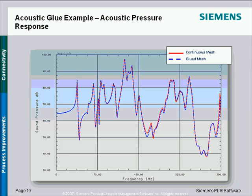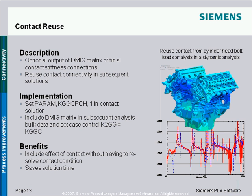For contact, we introduced what we call contact reuse. If you do a static analysis with a contact in it, you can now write out — using the parameter KGCPCH — to a DMIG, that's a matrix input file. It will write out the contact stiffness matrix. It's then very easy in subsequent runs to import this contact stiffness so that you don't have to recalculate the contact. For example, you can do a dynamic analysis and include the effect of the contact without having to resolve for it — you've already done it once in a previous solution.